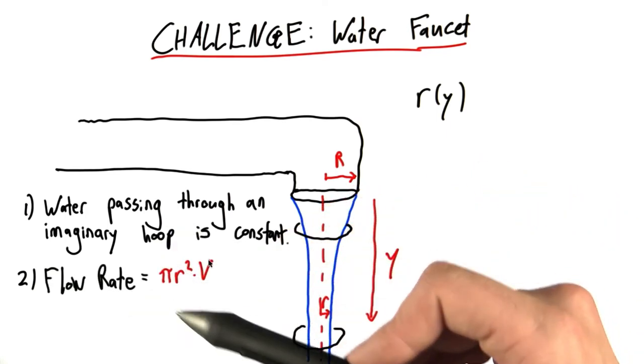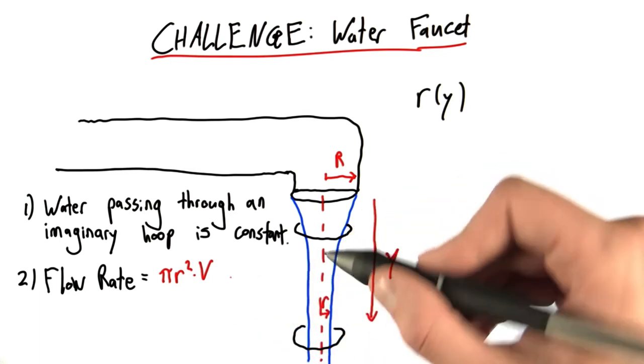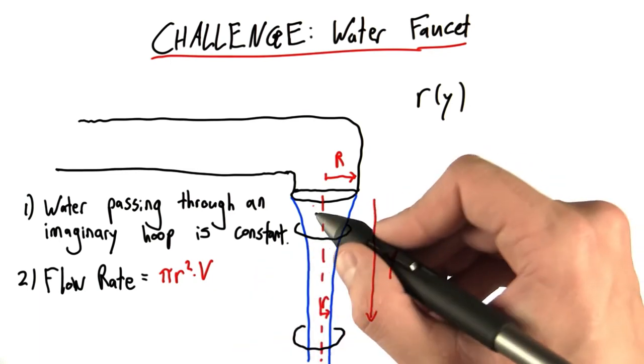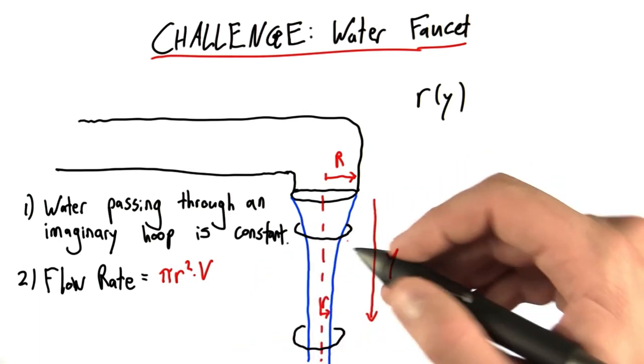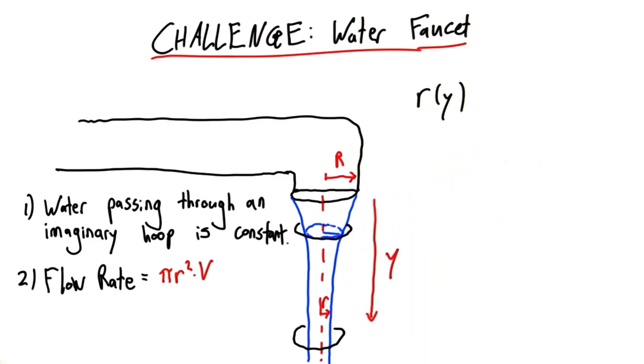You can also show that this flow rate is equal to the velocity of the water through a given ring, times the area, the cross sectional area, of the water at that point. So that would be pi r squared.